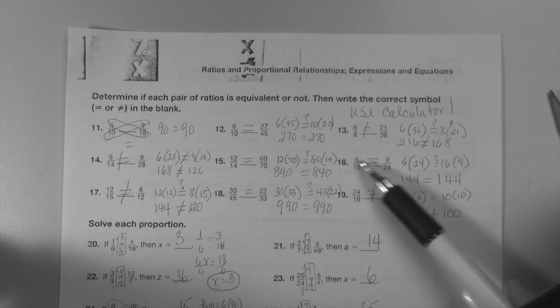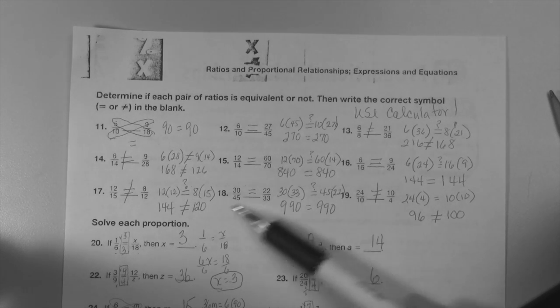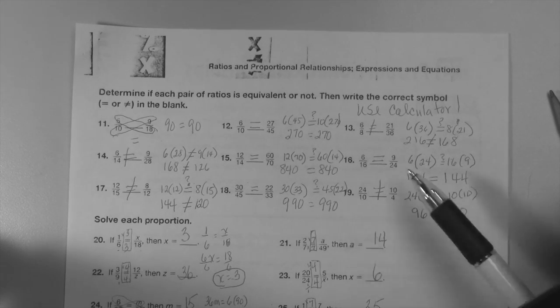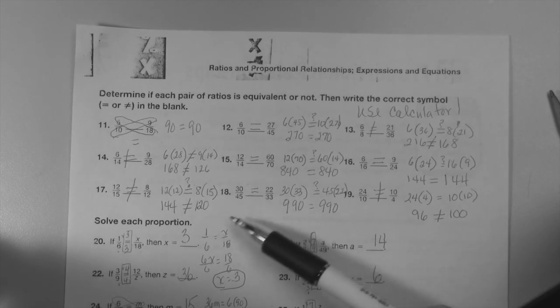I basically cross-multiplied all of them up on top of my calculator just to see ones that equaled and ones that did not equal. It showed you each step.